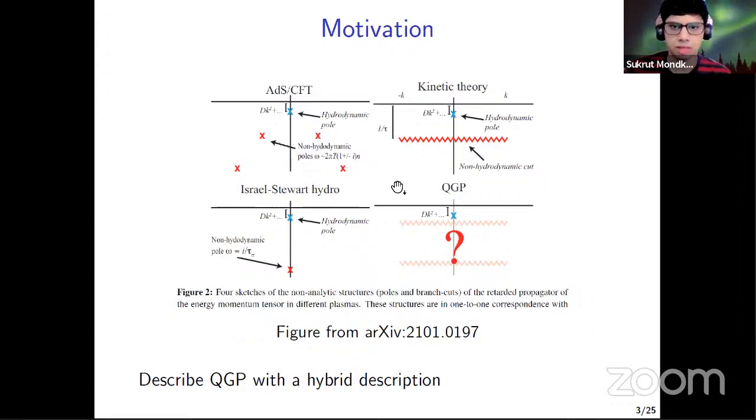Even though these theories describe different aspects of heavy ion collisions, the QGP, quark-gluon plasma itself, can have very different non-analytic structure. So we would like to see what happens, like how this non-hydrodynamic modes change, when we couple a weak description like a kinetic theory with some strong description like some strongly coupled holographic theory.